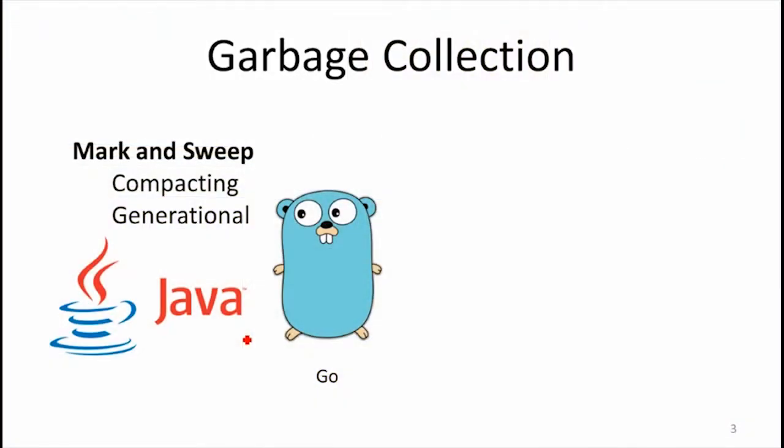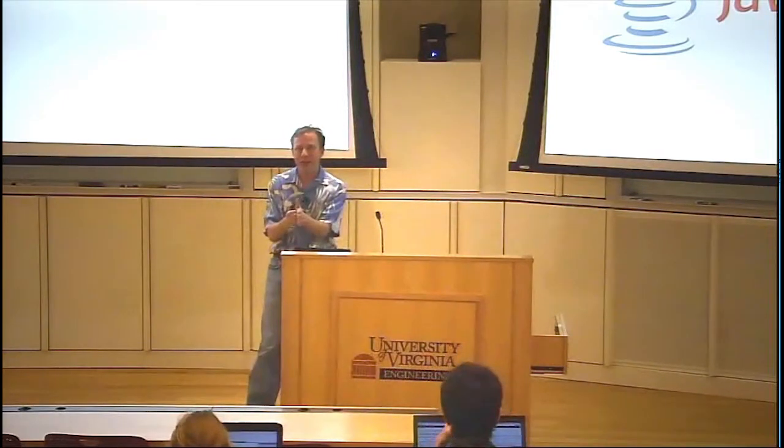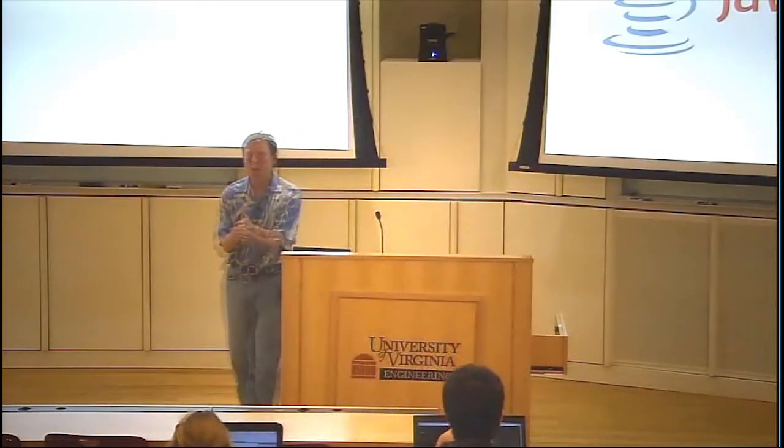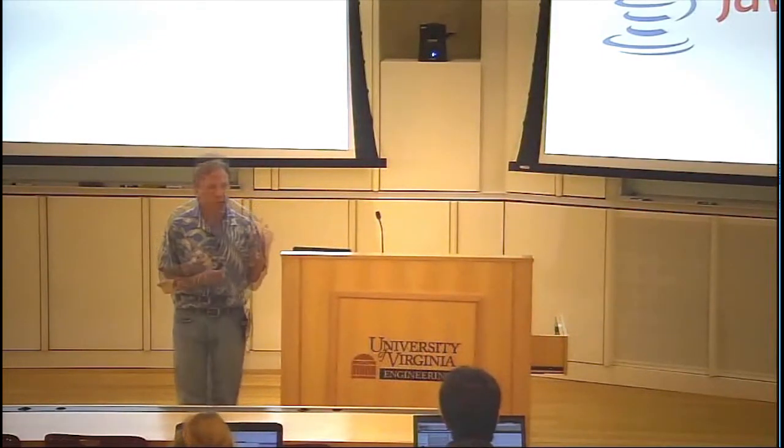I want to recap how garbage collection works in languages like Java and Go. The basic idea goes back to Lisp in the 1950s and 1960s. What does it mean for an object to be garbage in a program? A strong definition is it's garbage if the program is never going to use it again. So if we're at point P and we know this object will never be used again, it's useless to keep it in memory. But are garbage collectors able to predict the future well enough to know that?